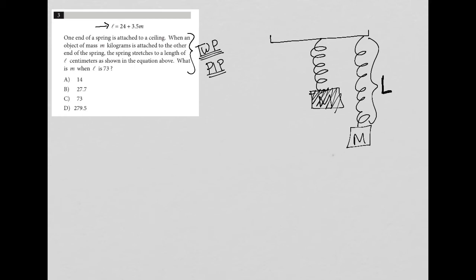So the first spring represents the spring without the mass. The second drawing represents what happens when you add the mass to it.